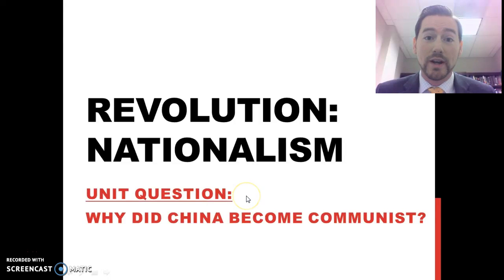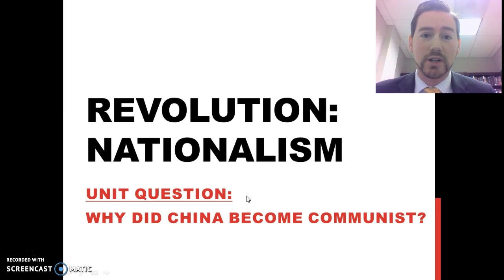Today we are starting in the 1900s, looking at what happened in China after the 1800s and all the different things we've been discussing throughout this unit. We have a new unit question: Why did China become communist?